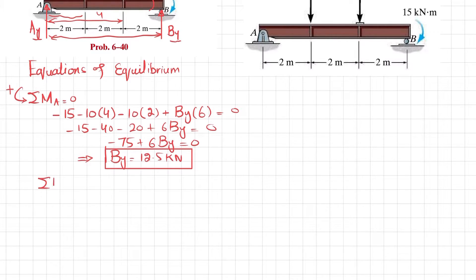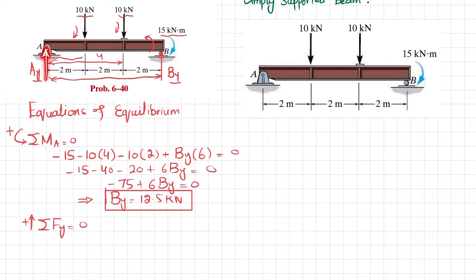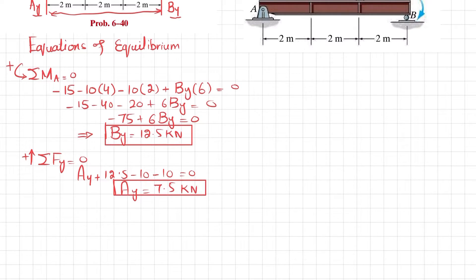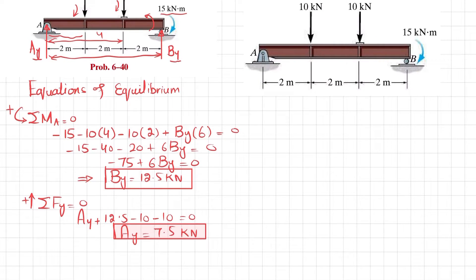Now we find A_y using the other equilibrium condition: sum of all forces along the Y direction equals zero. A_y plus B_y minus 10 minus 10 equals zero. Substituting B_y = 12.5: A_y plus 12.5 minus 10 minus 10 equals zero, so A_y equals 7.5 kilonewtons. Now we have both reaction forces and can draw the shear force and bending moment diagrams. A_y is 7.5 kN and B_y is 12.5 kN.